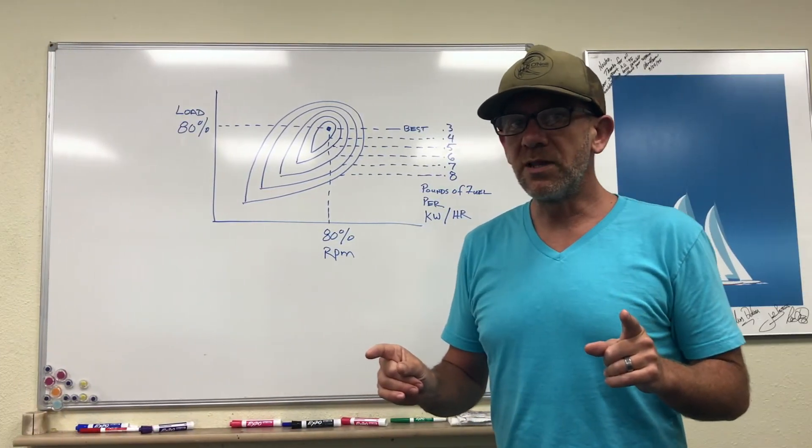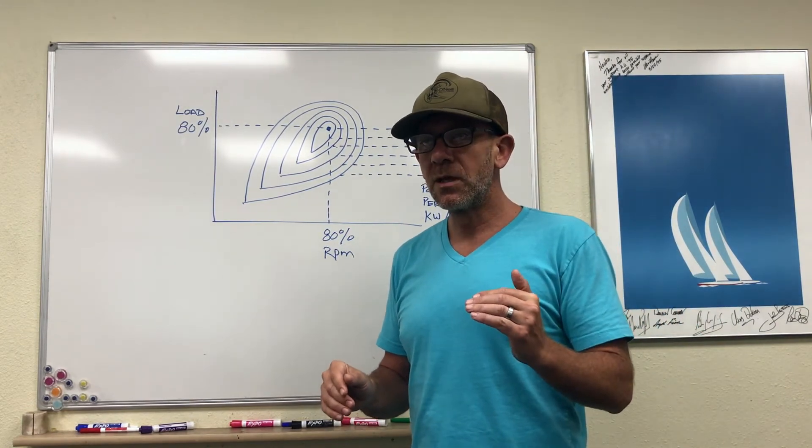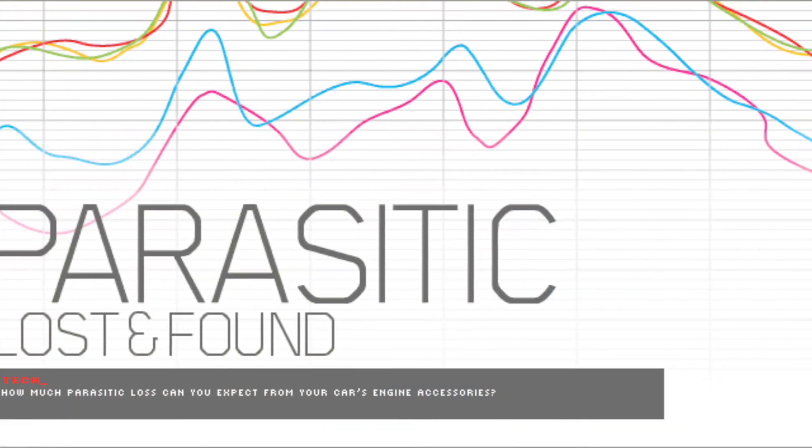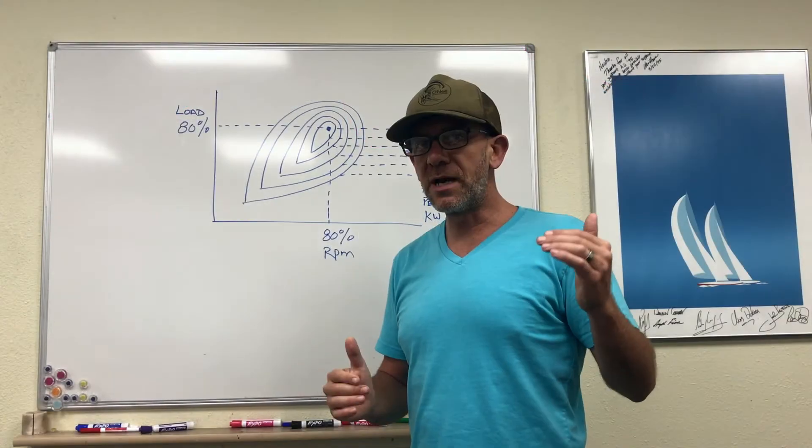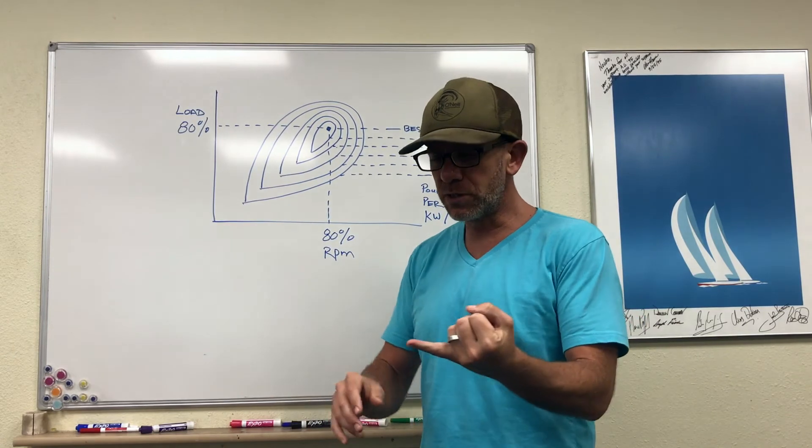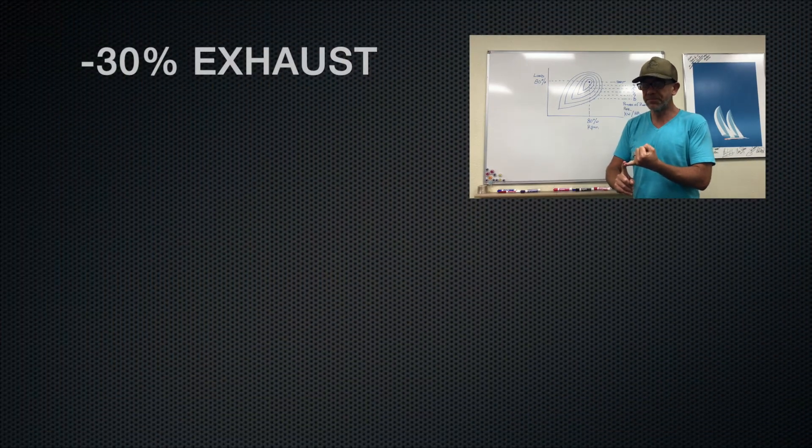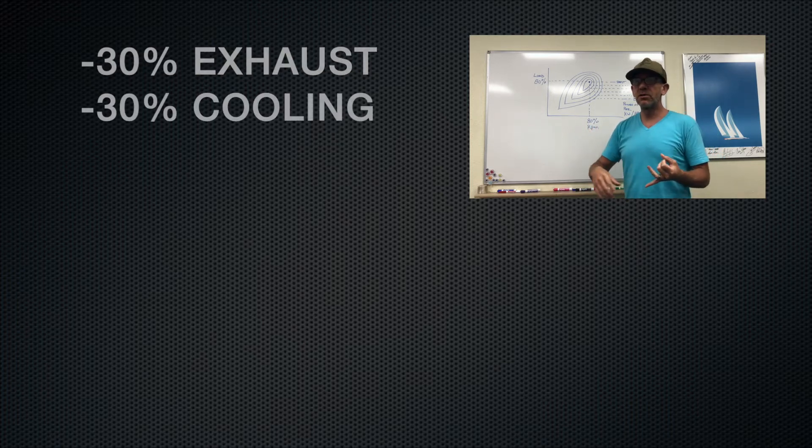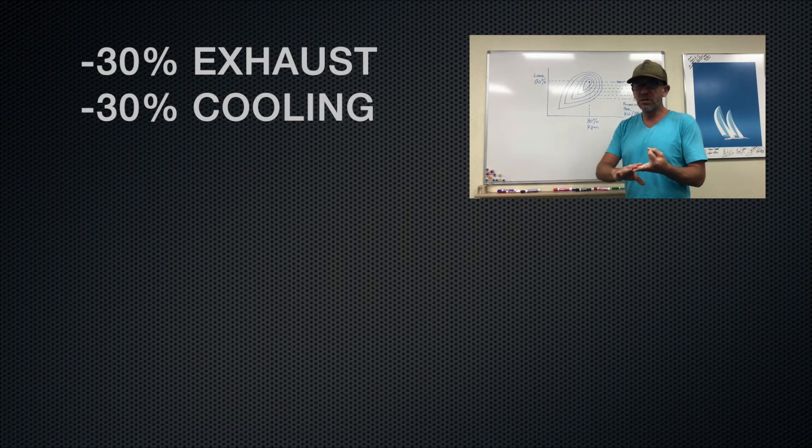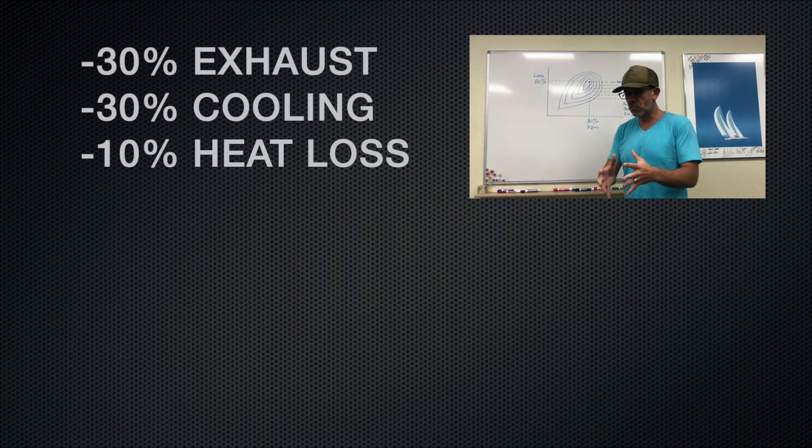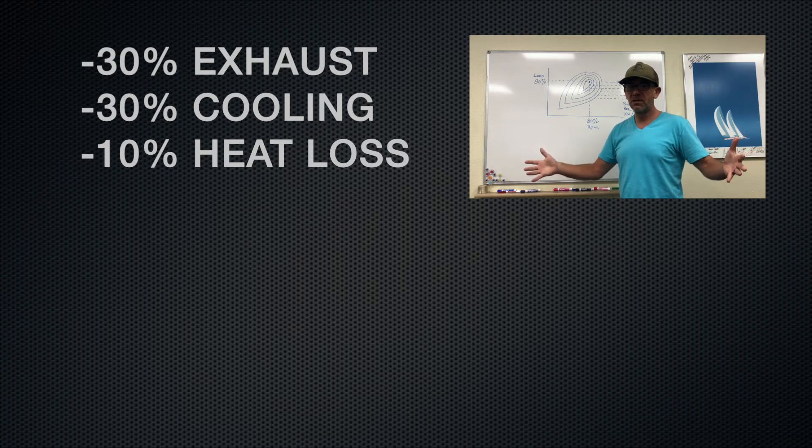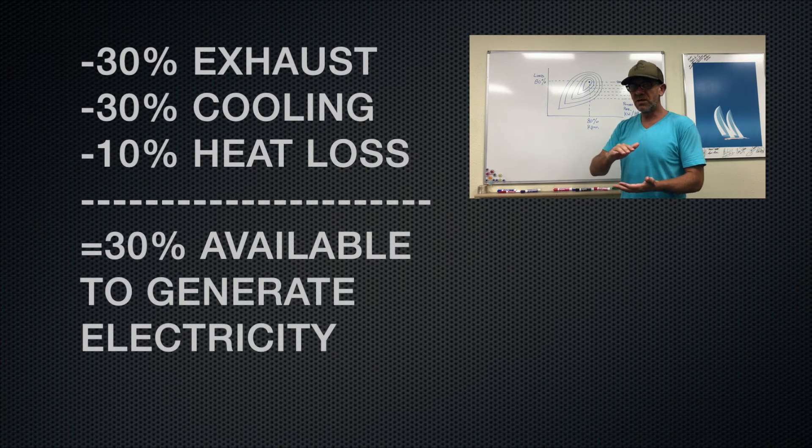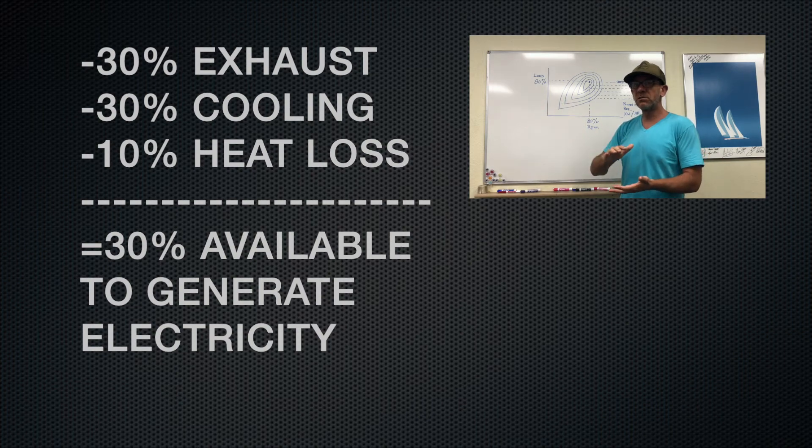Now when you run that fuel through a diesel motor, diesel motors have considerable parasitic losses. Those parasitic losses will detract from the overall power. So you're going to spend roughly 30% of the energy going out the exhaust pipe. Another 30% is going to go through the cooling system, and then you're going to lose another about 10% of just radiated heat coming off of the block.